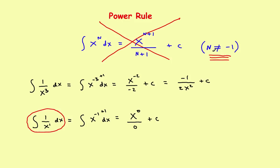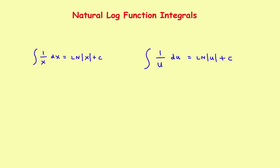As long as n is not equal to negative 1, the power rule works. But whenever you've got 1 over x — that's like having x to the negative 1 — the power rule doesn't work and you have to switch to this new rule. The antiderivative of 1 over x is equal to the natural log of x plus c.